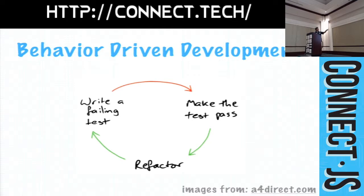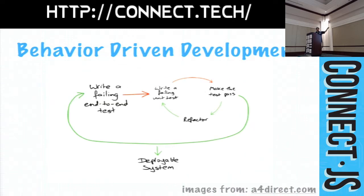Test-driven development looks like a nice tight circle, whereas behavior-driven development looks more like this: you write the failing spec first, which may lead to one or more unit tests you have to write. When you're done and you check that in, you have something that's deployable because you have a business rule that now works. That's key toward business agility — businesses have to be able to deploy things more and more often due to competitive pressures. By doing this, you become more agile and more aligned with business needs.